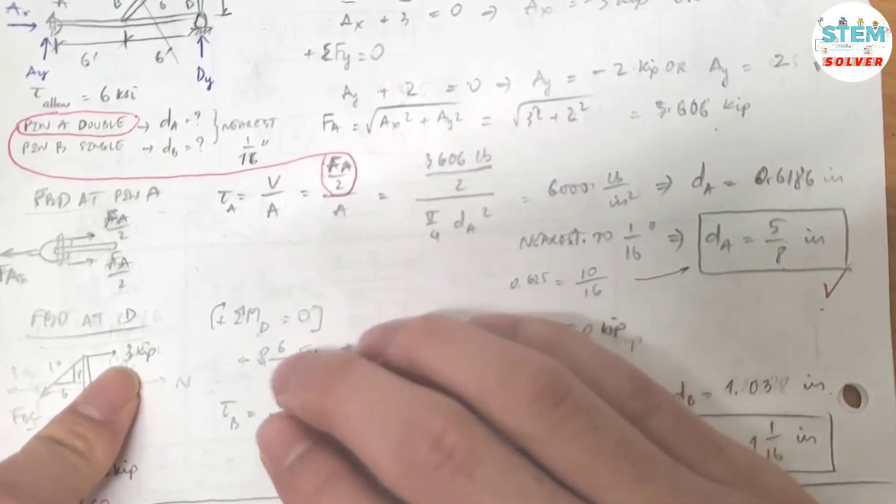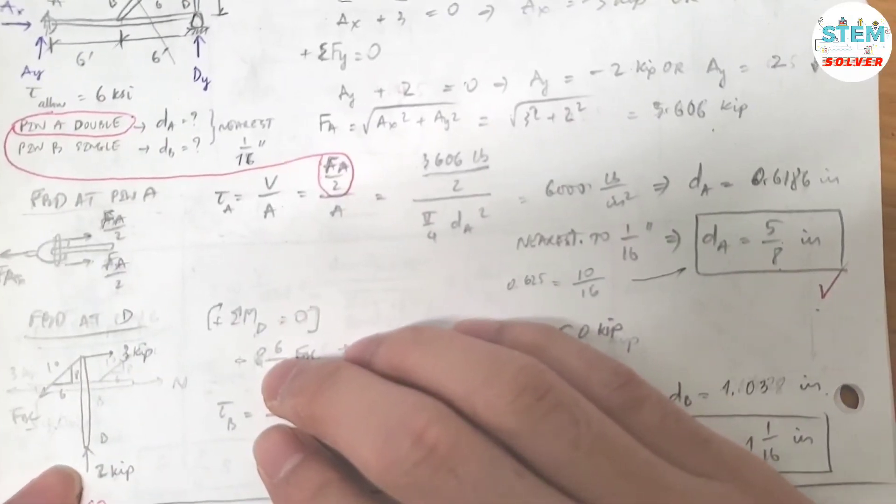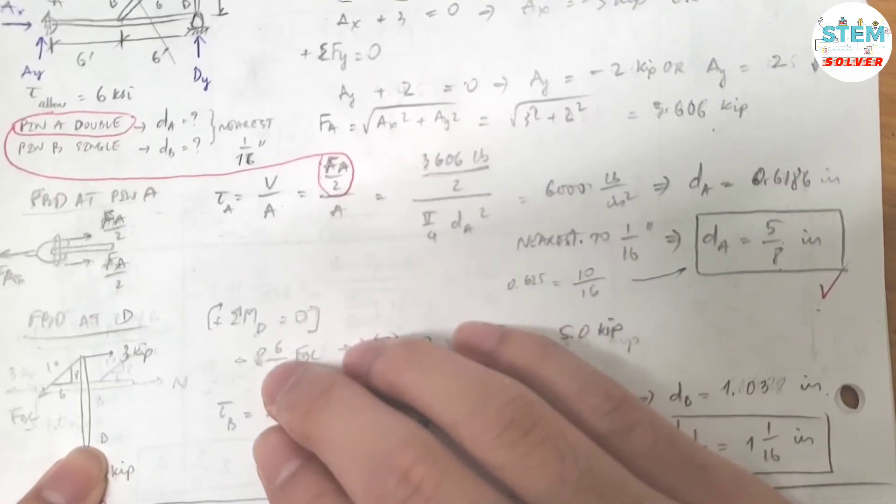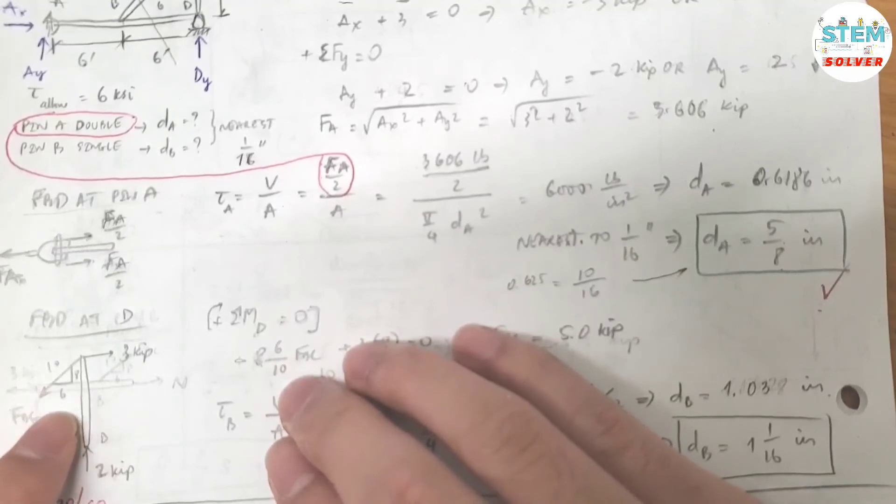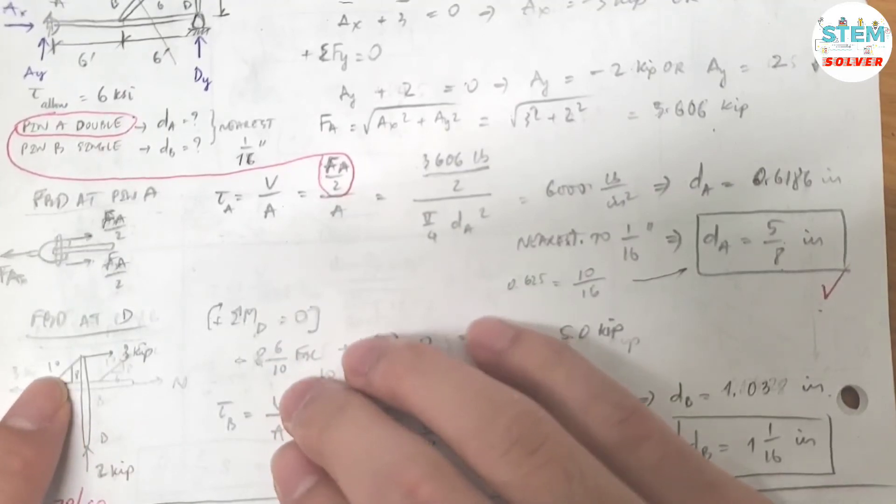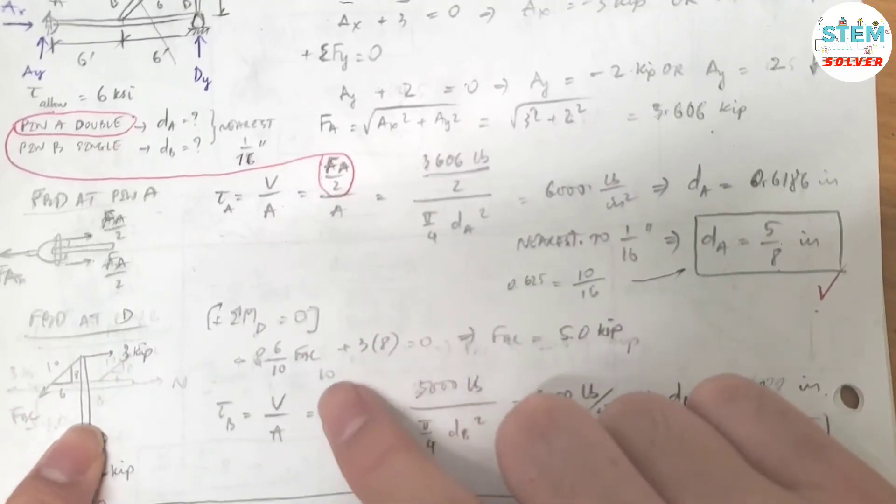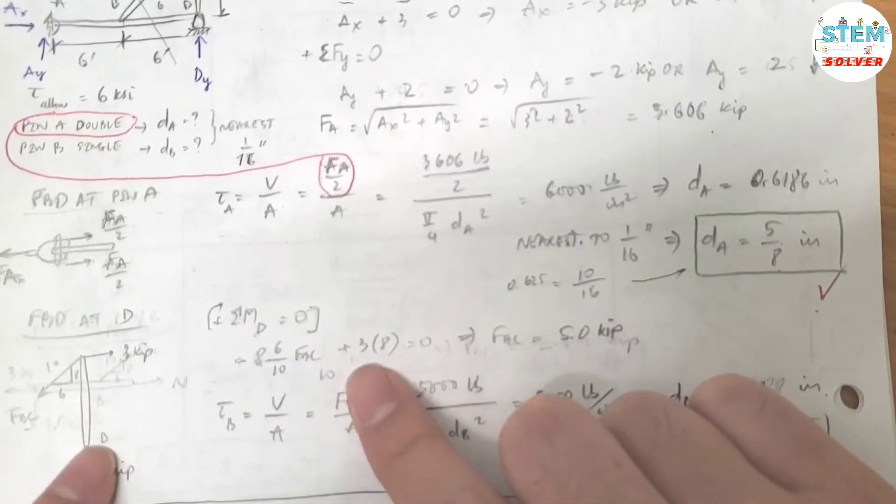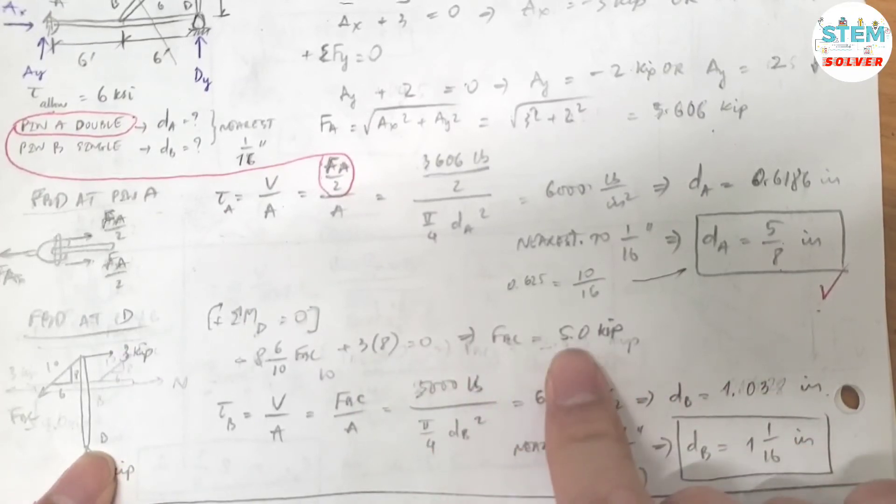Let's do the summation about the moment about D. You have negative 8, which is the distance of the beam, times the force FBC. And FBC is equal to 6 over 10 FBC, which is the ratio of the X component, plus 3 times 8 equals 0. And then you solve for FBC which gives you 5 kips.